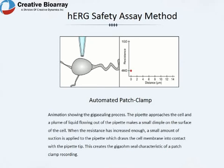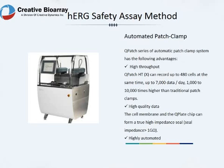Automated patch clamp is a higher throughput HERG safety assay with better consistency at a lower cost. It uses an automated patch HT system. The PATCH HTX system can record up to 480 cells at the same time, up to 7,000 data points per day — 1,000 to 10,000 times higher than traditional patch clamps. Additional advantages include high quality data output and high automation.